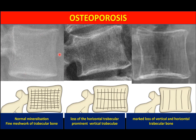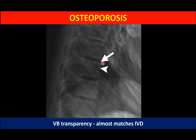In normal vertebral bodies, both vertical and horizontal trabeculations are dense. In osteoporosis, horizontal trabeculations are reduced first, leaving visible vertical striations. As osteoporosis worsens, eventually some vertical trabeculations are also lost. In the vertebral body cortex, thinning of the cortical bone leads to the appearance of 'picture frame vertebrae' or the 'empty box sign' — a thin rim outlining the outer aspect of the vertebral body.